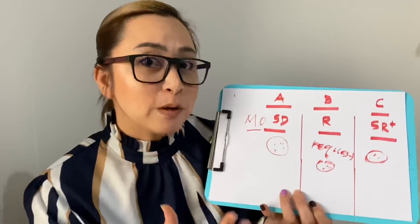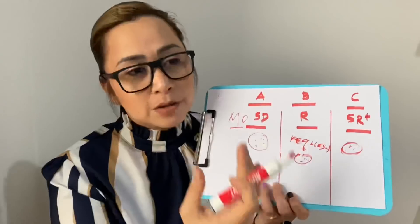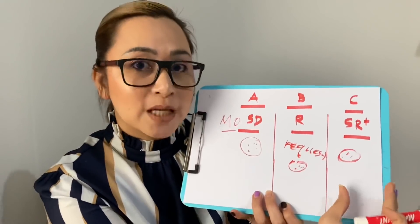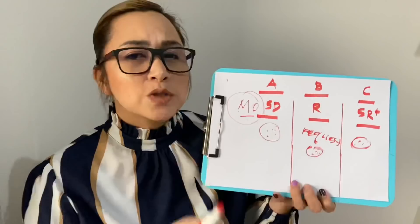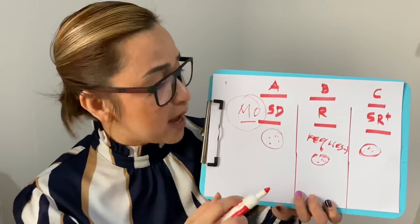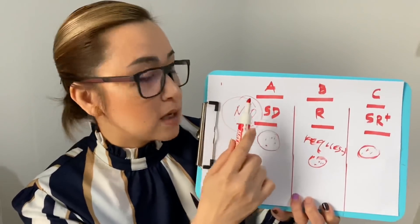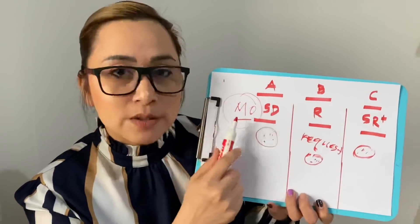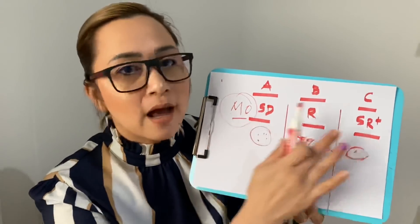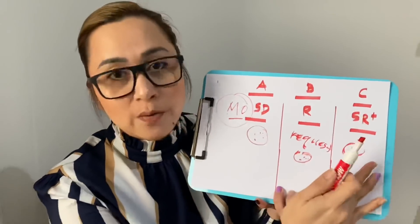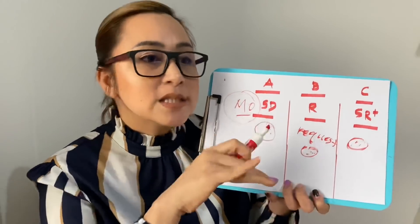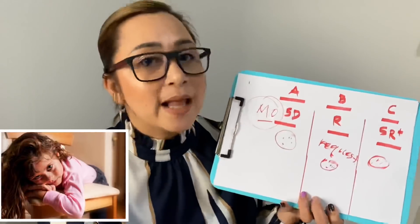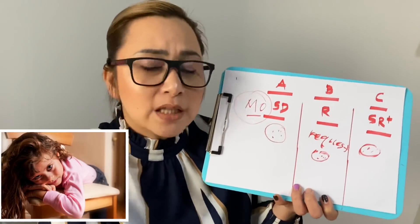For example, your child requested for a pencil, your child requested for a tissue — then the reinforcer will be a tissue and nothing else. For MAND, we need motivating operations so that it will be effective. Because without motivating operations, we cannot get your child to request. If your child doesn't like the item, the value is down and he will not request for it. But if your child likes the item, of course he will request for it.